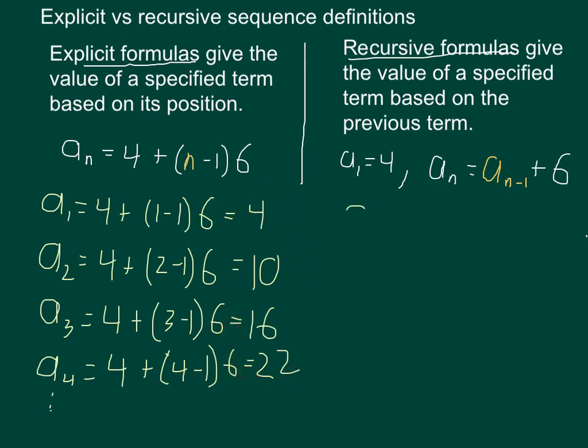For recursive, part of the definition actually is the first term. So that's given to you to be 4. The next term, in this case, the second thing in this sequence, is then based on the previous thing.